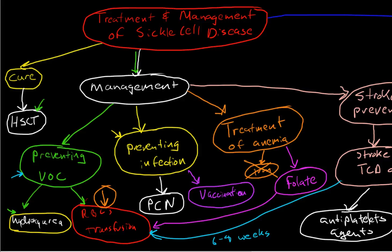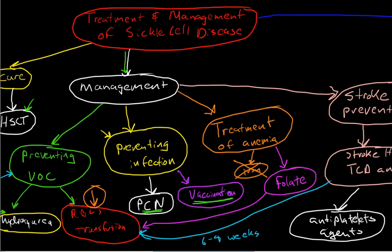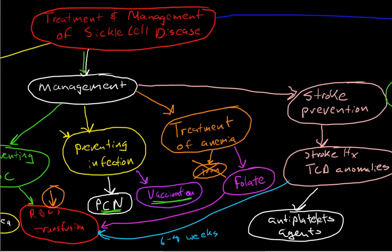The next aspect of management to consider is preventing infection. For children less than five years old, penicillin prophylaxis is critical. For all patients, make sure their vaccination schedules are up to date — they should be receiving pneumococcal vaccinations and yearly flu vaccines. The third element of management is treatment of the hemolytic anemia seen in sickle cell disease. Iron is generally not helpful, and in patients with iron overload it may actually be detrimental. The mainstay of treatment here is folate supplementation.